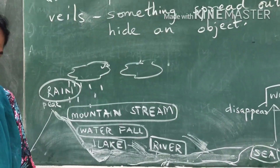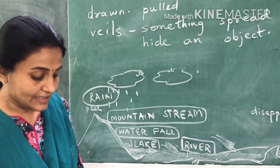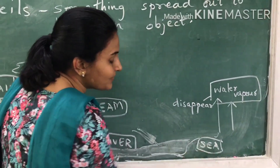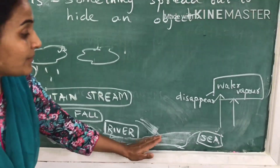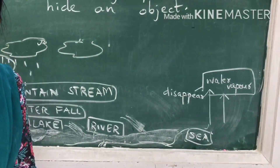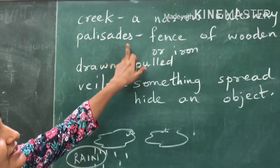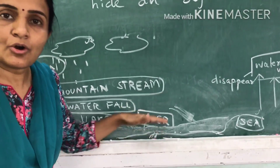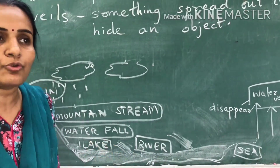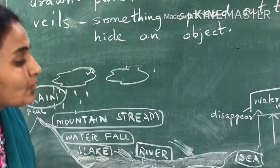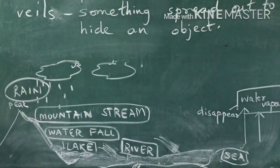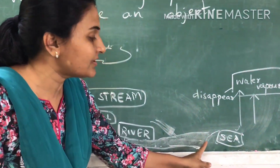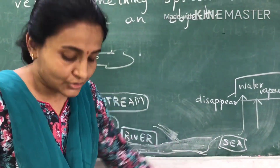'I pass through a gateway of high stone palisades, leaving the land behind.' The river ends into the sea. On its way it passes through rocks and palisades — fences of wooden sticks or iron. Finally the river leaves the land behind and goes into the sea.